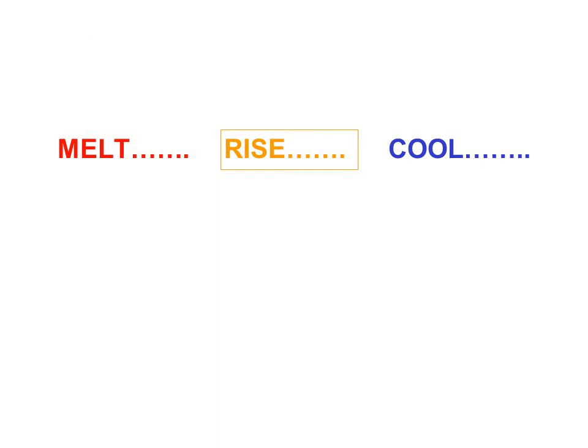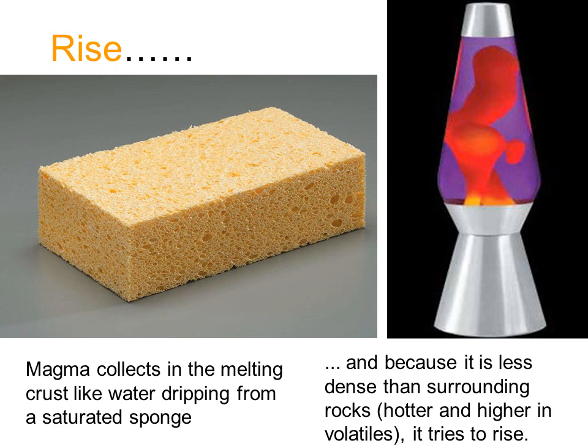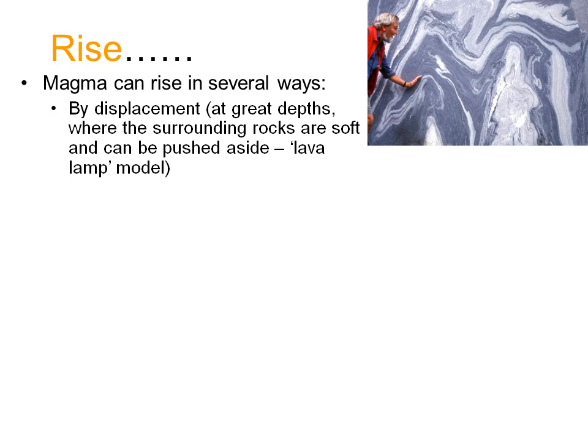Now let's look at transporting this metal-rich melt upwards to where it can cool and deposit metals at potentially mineable depths. Like water dripping from a saturated sponge, the melt collects in any open spaces it can find. Because it is less dense than the surrounding restite, it starts to rise through the crust — slowly at first, but increasingly rapidly as it accumulates into bigger bodies and enters cooler rocks. Think of it as the hot wax in a lava lamp. At depth, where the rocks are hot and plastic, it simply displaces the rocks and passes through, shouldering the softer rocks aside and allowing them to close behind it — rather like wax pushing the oil in the lava lamp.